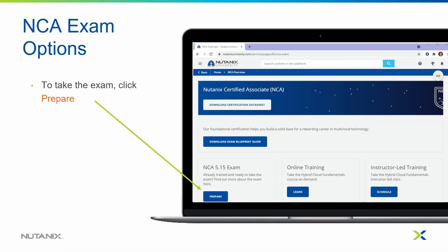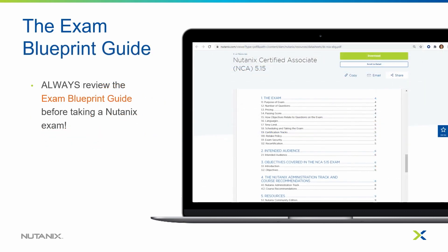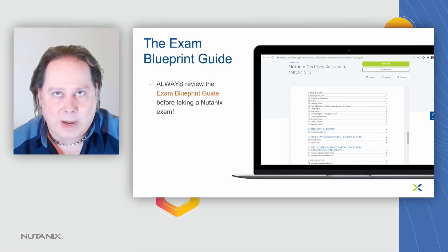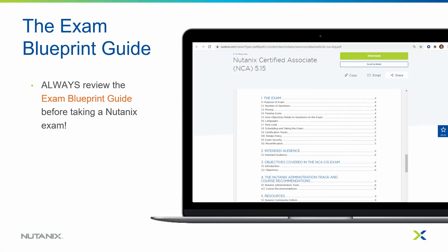Once you've completed your training and are ready to take the exam, go to the NCA exam and click the Prepare button. This gives you a list of steps to prepare. The first step is to download the exam blueprint guide and review our user's guide to taking a Nutanix certification exam. Nutanix exams use remote proctoring, which may differ from facility-based exams you've taken before. The blueprint guide covers everything: number of items, exam length, objectives, and available references.